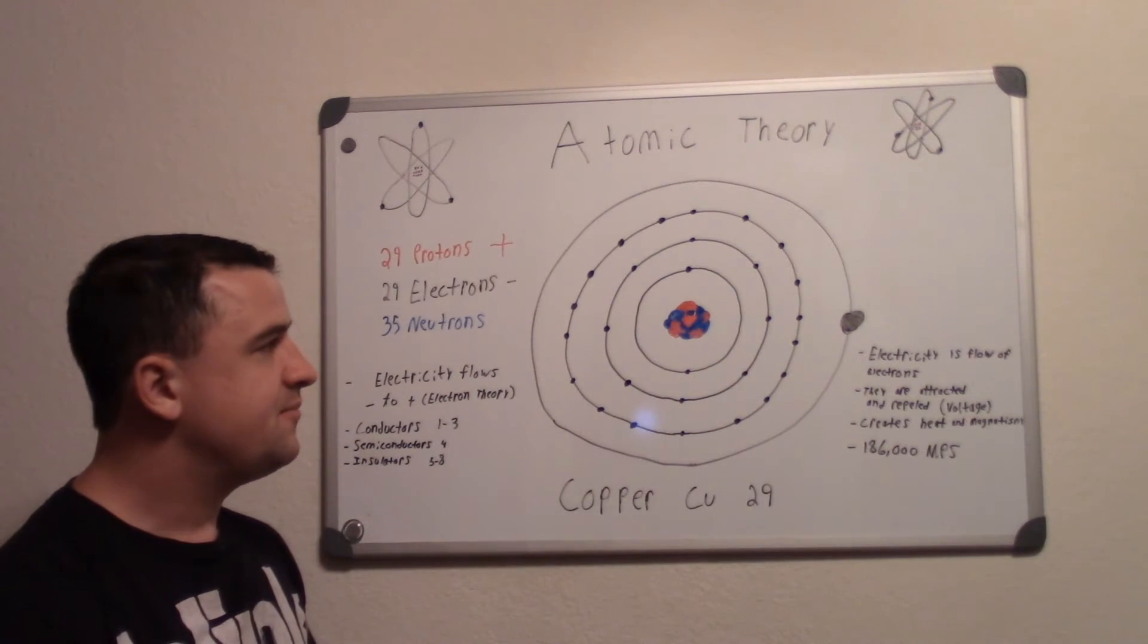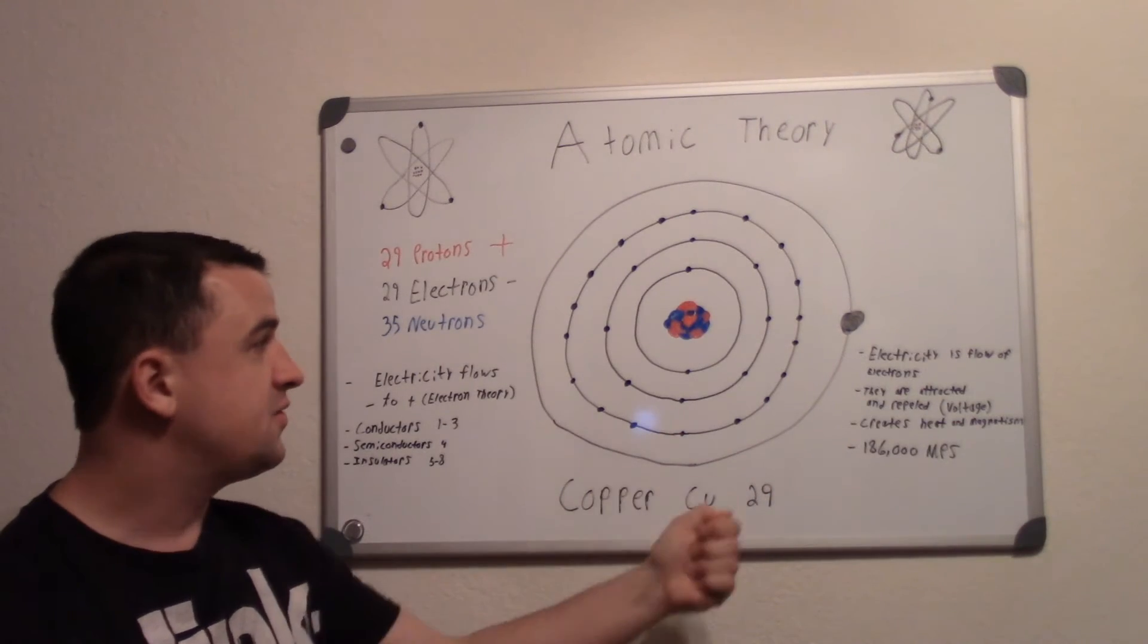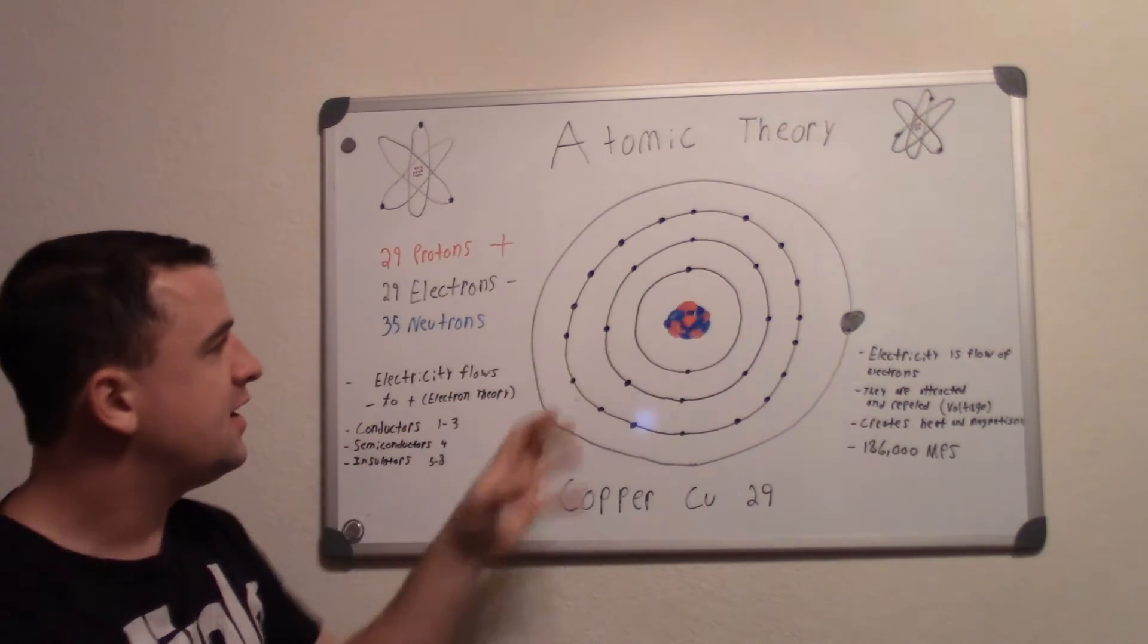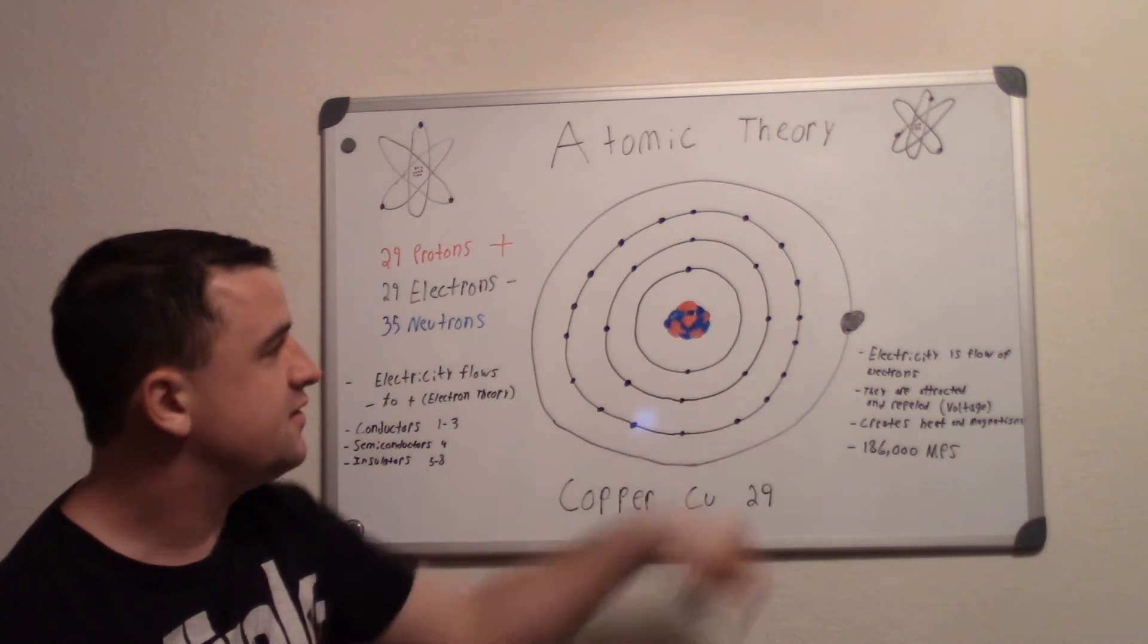That's the one that is really flowing during electricity because it's the farthest one out, whereas these ones are held to it and this one is loosely held.